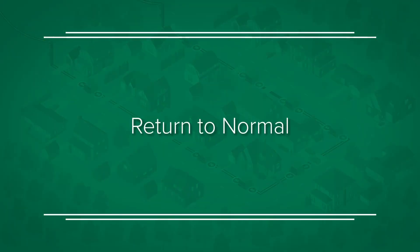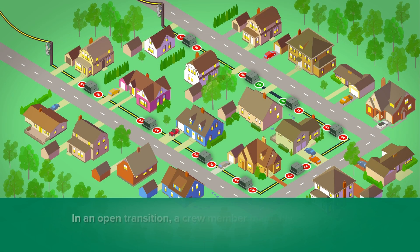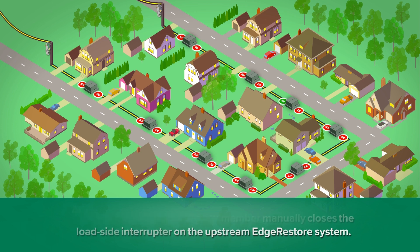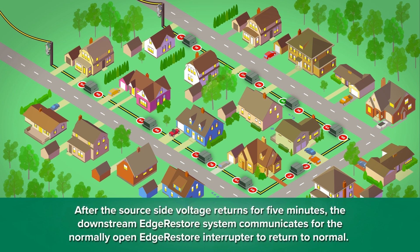After a crew repairs the cable fault, the return-to-normal process can begin. In an open transition, a crew member manually closes the load-side interrupter on the upstream Edge Restore system. After the source-side voltage returns for 5 minutes, the downstream Edge Restore system communicates for the normally open Edge Restore interrupter to return to normal.